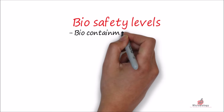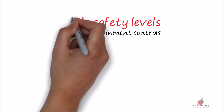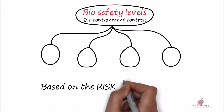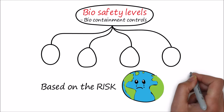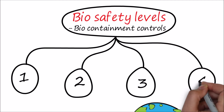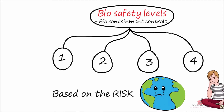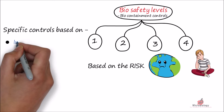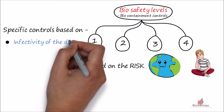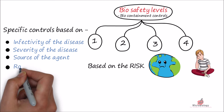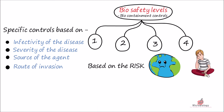Biosafety levels are a set of biocontainment controls that are required to separate the biological agents based on the risk they cause on the environment and human beings. These levels are ranked from 1 to 4. Each level has specific controls for containment of biological agents and microbes. The controls are based on the infectivity of the disease, severity of the disease, source of the agent, and route of invasion into the human body.